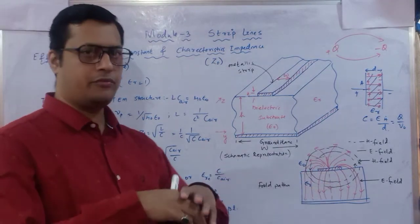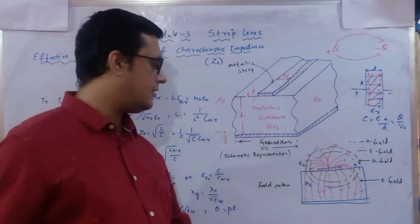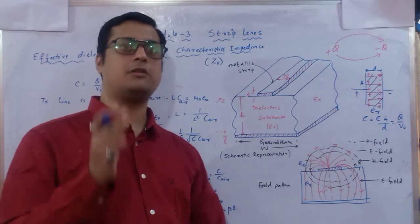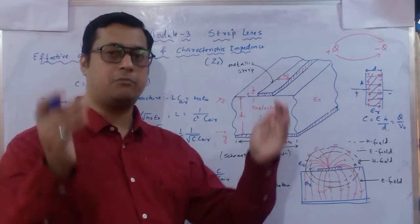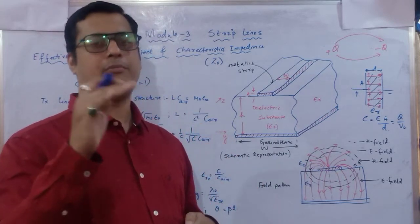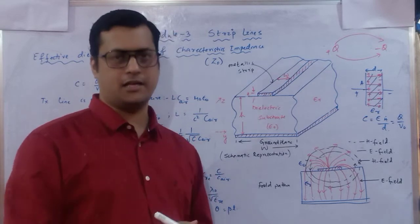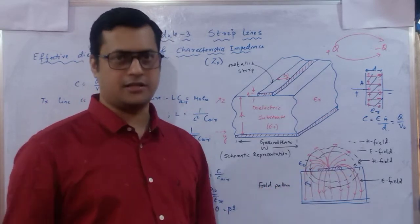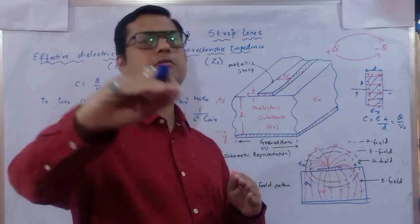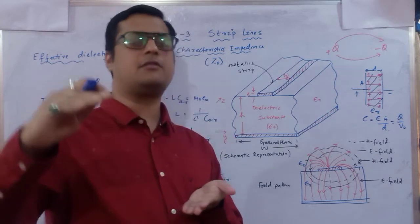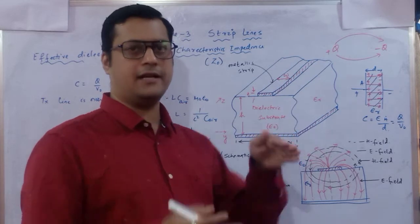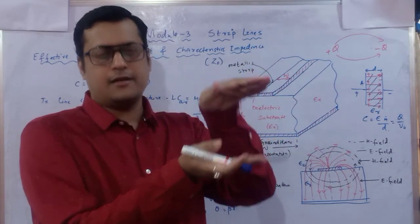When potential is provided to the metallic plate, the charge distributes throughout it. With the metallic plate above and the ground plane below, a capacitor is formed. The capacitance can be determined as Q = epsilon × A / d, where d equals h (the height of the substrate). Here, epsilon depends on epsilon_r × epsilon₀ for the combined medium.